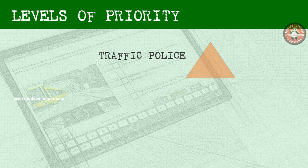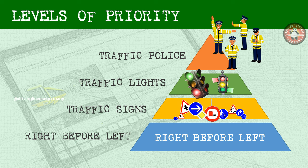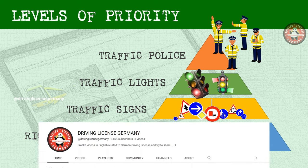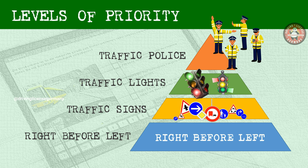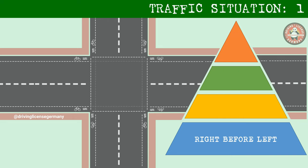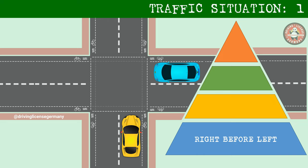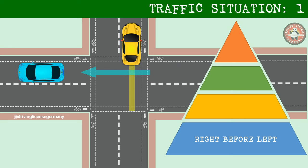There are different levels of priority: traffic police commands have the highest priority, next comes traffic lights, then traffic signs, and finally right before left. Now, try to understand different traffic situations. We have a junction with no traffic police, traffic signals, or traffic signs — hence the rule right before left applies. We have a yellow car and a blue car. It doesn't matter if any vehicle wants to turn left, right, or go straight ahead. The blue car coming from the right has priority and should drive first.